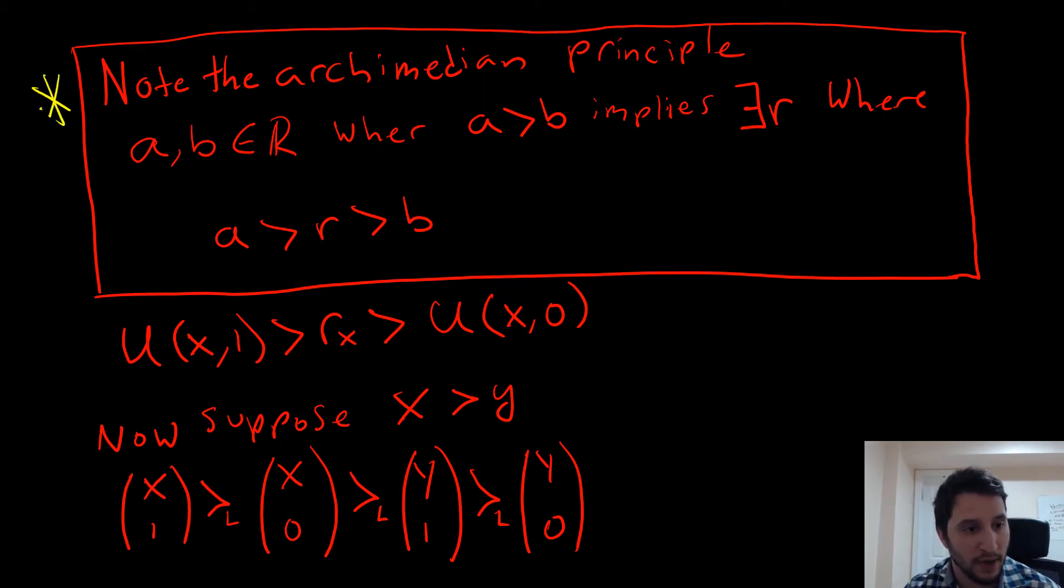We're going to use this thing called the Archimedean Principle. And that just states that whenever there is an A and B in a set of real numbers where A is greater than B, that implies there exists some R, which we're going to call a rational number, such that between A and B, R is going to be there. So A is going to be greater than R, but R is going to be greater than B. Putting that into our utility function, because our utility function is a mapping from R^n to the reals, we're going to have our x here.